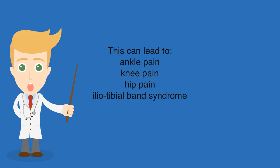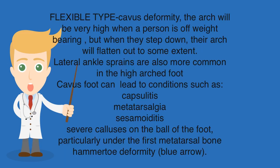The poor shock absorption of the rigid type can lead to ankle pain, knee pain, hip pain, and iliotibial band syndrome. With flexible type cavus deformity, the arch will be very high when a person is off weight bearing, but when they step down, their arch will flatten out to some extent.